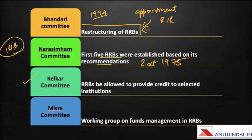Then we have the Kailkar Committee. A working group on regional rural banks was formed and the Kailkar Committee was constituted in 1984. Its major contribution was that RRBs should be allowed to provide credit to selected institutions such as local bodies or housing boards, besides their target group. Such loans should be given only to financially sound institutions and for productive purposes alone.